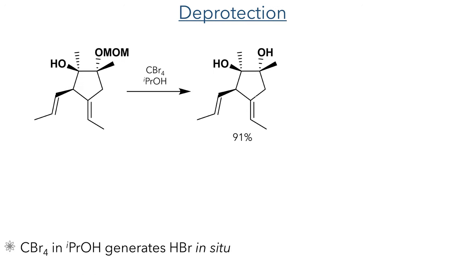In the next reaction, the MOM group was deprotected using the unusual conditions of carbon tetrabromide and isopropyl alcohol. These conditions were arrived at after more typical conditions did not sufficiently deprotect the product in a high enough yield. This reaction works by generating a small amount of HBr in situ, which can hydrolyze the MOM group, producing the product in a 91% yield.